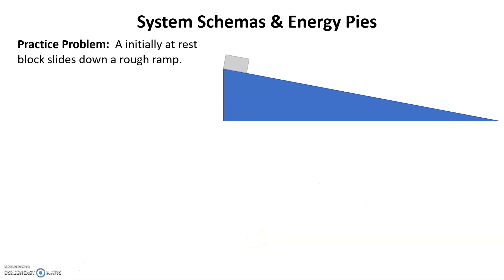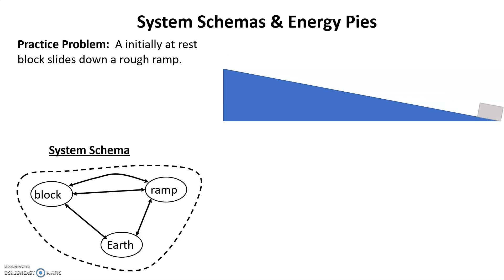Let's try one more problem as a practice. Here we have this block that's sliding down this rough ramp. The system schema would show the earth, the block, and the ramp. The earth touches the block through gravity, and it touches the ramp through gravity. The ramp is touching the block. And the reason why there's two arrows is because it's a rough ramp, it's sliding. So there's two arrows whenever they're sliding against another surface. And we put a dotted line around everything because everything's inside the system.